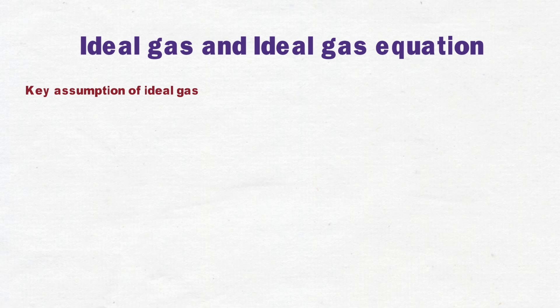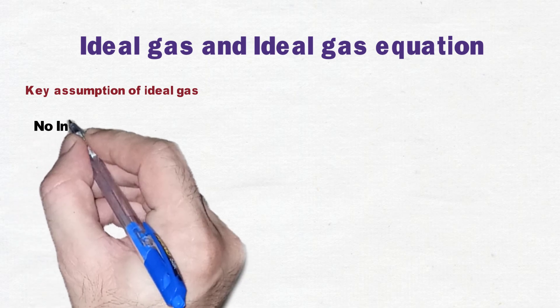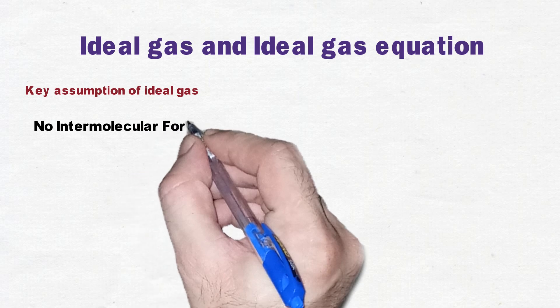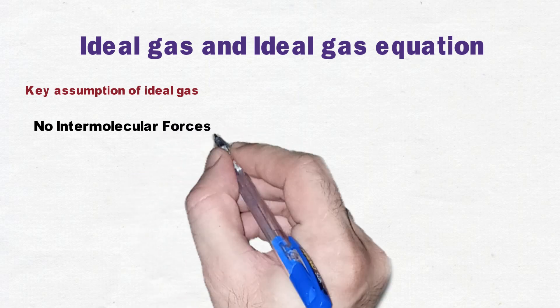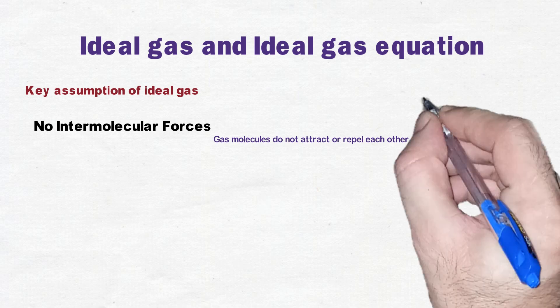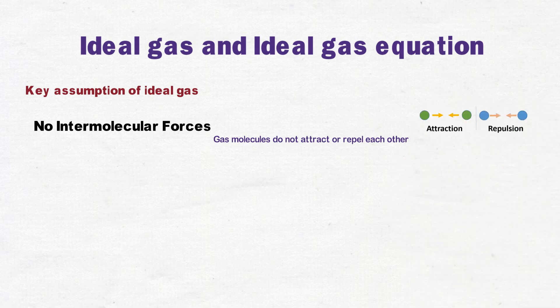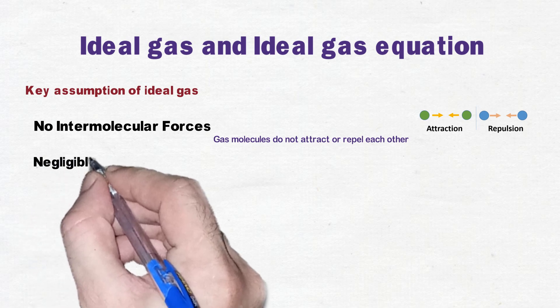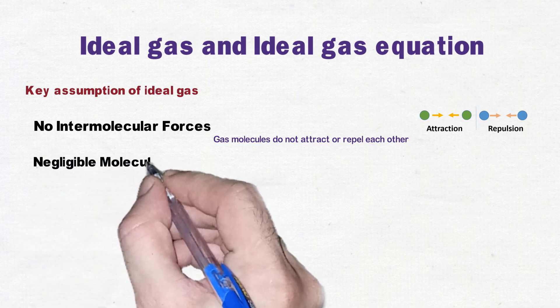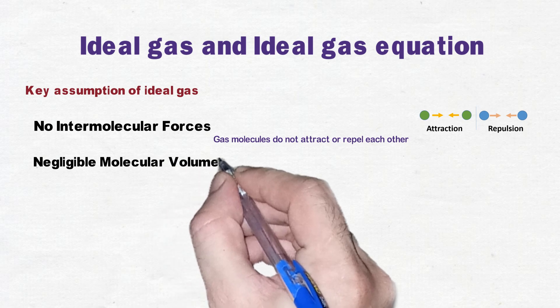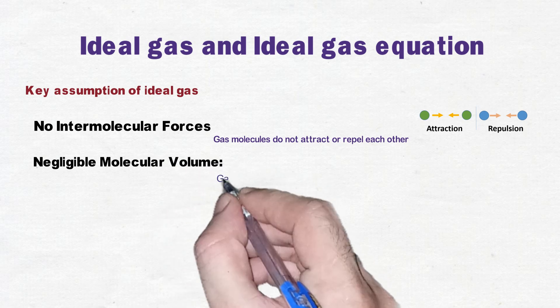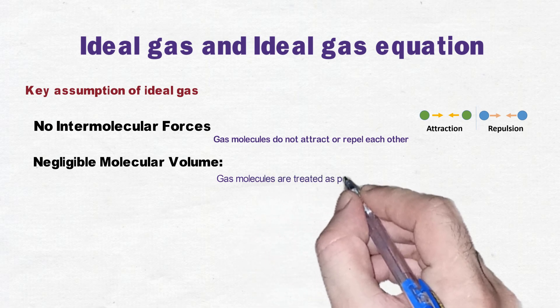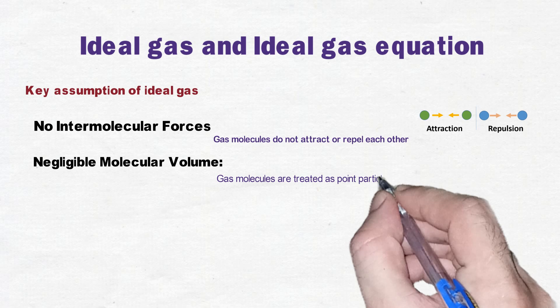Here are the key assumptions of ideal gas. We know gas is composed of small particles known as molecules. Assumption number one: no intermolecular forces. Gas molecules do not attract or repel each other. This assumption simplifies the motion of molecules as purely independent with no force acting between them. The volume of individual gas molecules is so small compared to the volume of the container that it is considered negligible, so gas molecules are treated as point particles.